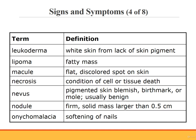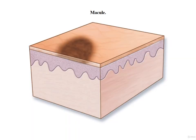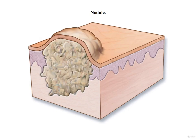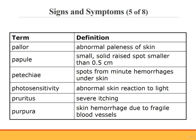This slide depicts a macule — notice how the macule is flush with the skin. Here is an illustration of a nodule. Pallor refers to an abnormal paleness of the skin. A papule is a small, solid, circular raised spot on the skin less than 0.5 centimeters. Petechiae are pinpoint purple or red spots from minute hemorrhages under the skin. Photosensitivity is a condition in which the skin reacts abnormally when exposed to light. Pruritus is severe itching — note the correct spelling of this term as it's often misspelled. Purpura are hemorrhages into the skin due to fragile blood vessels; it's not uncommon to see those in older adults and persons who are taking a blood thinner.